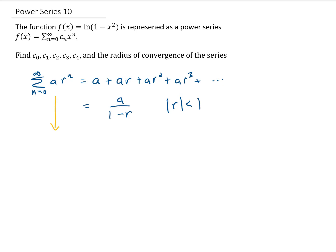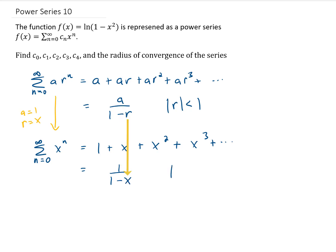What I want to do is take this series and plug in a equals 1 and r equals x. We end up getting the sum 1 plus x plus x squared plus x cubed and so on, and this whole thing adds up to 1 over 1 minus x, as long as the absolute value of x is less than 1. That is a well-known power series you could also look up in a table.